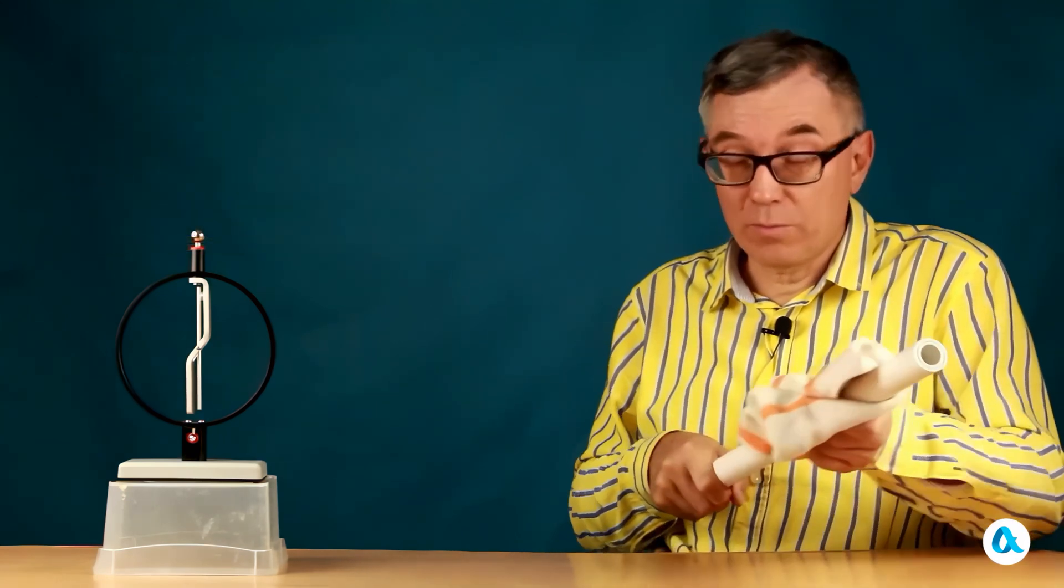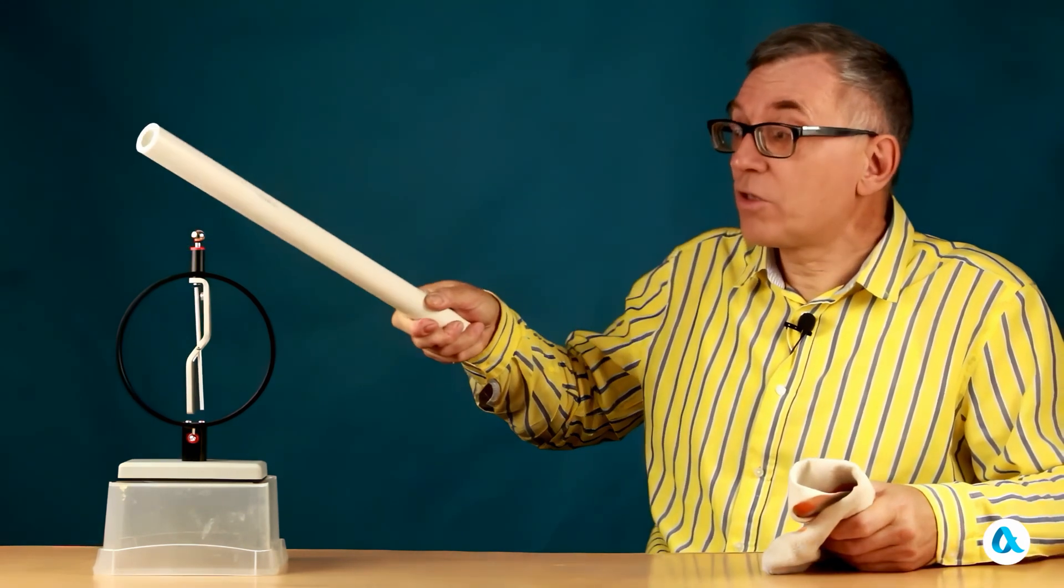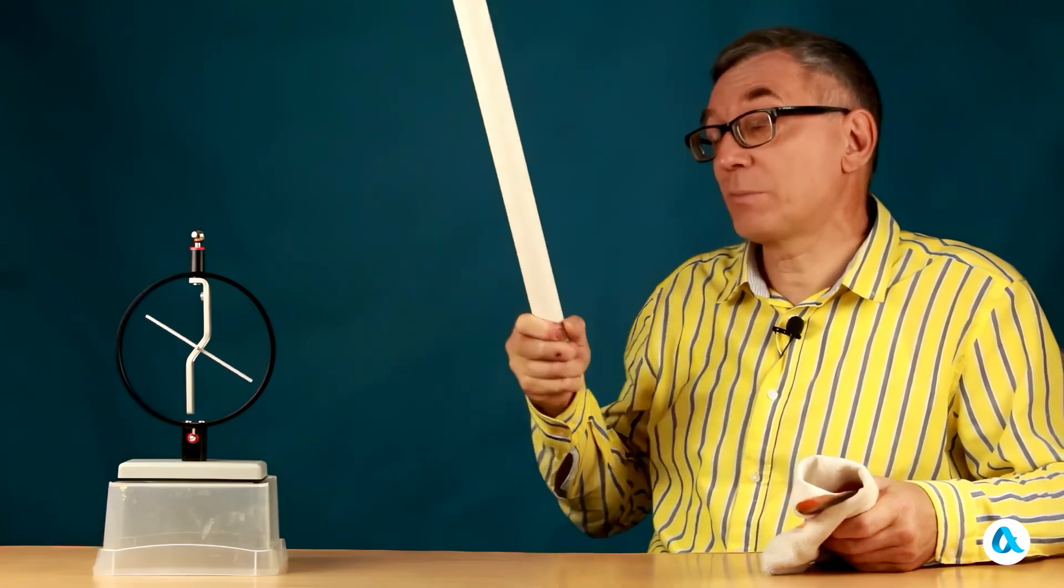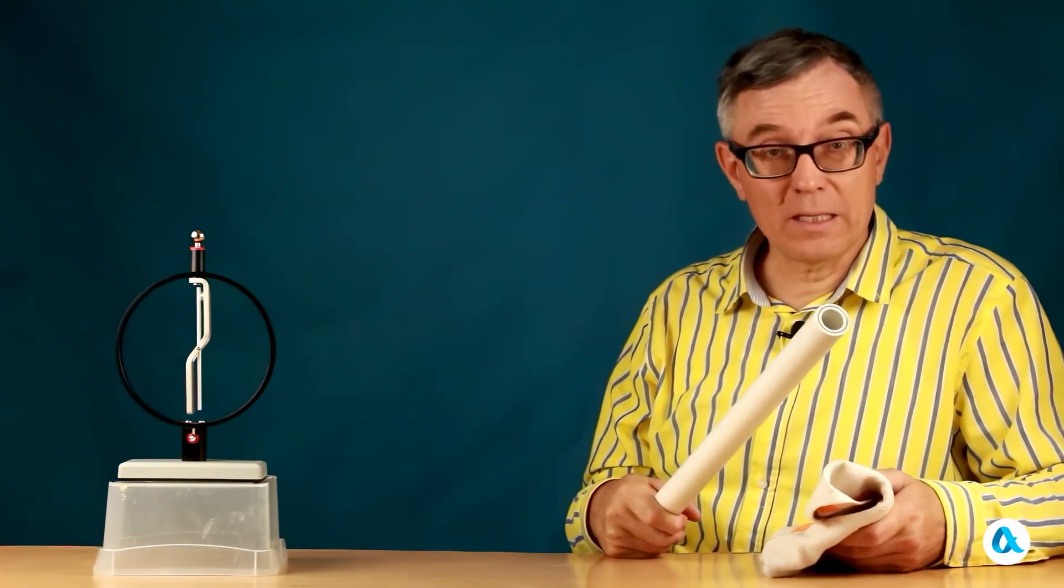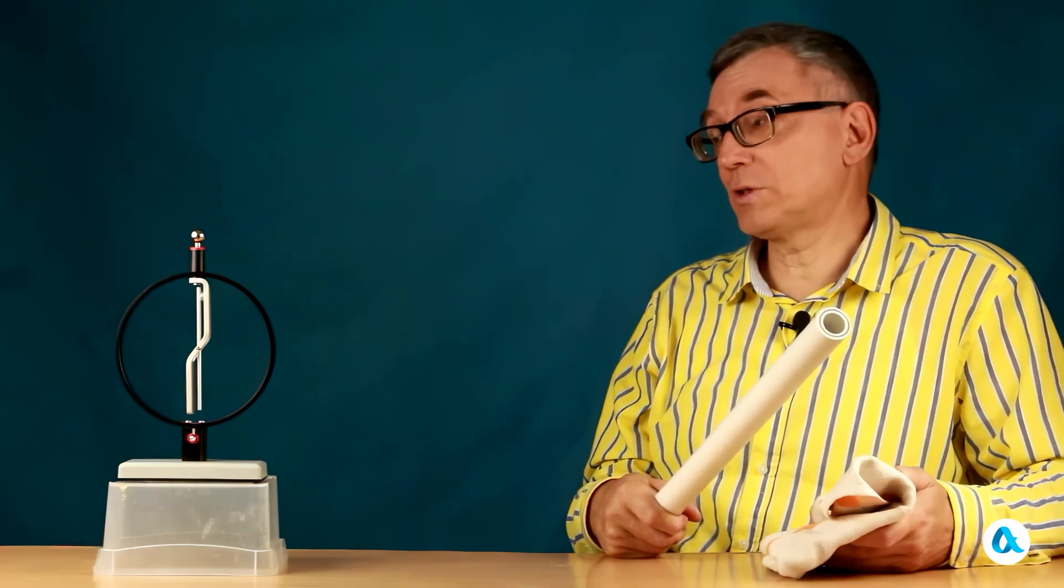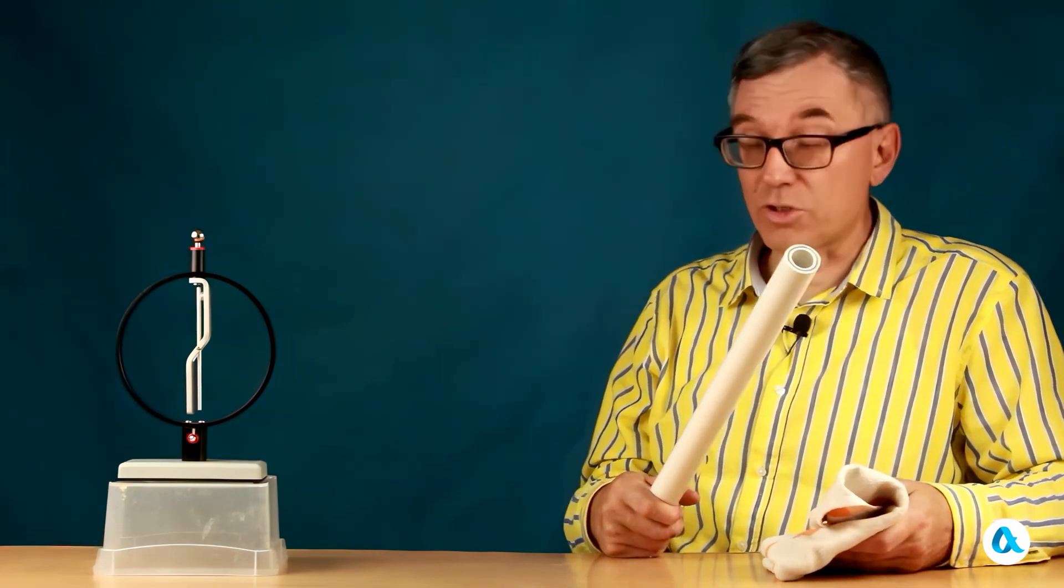I rub a plastic tube, bring it close to the electroscope's ball, and we see that the electroscope's needle deflects even though I didn't touch the ball. And as soon as I move the tube away, the needle returns to its original position.